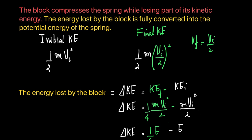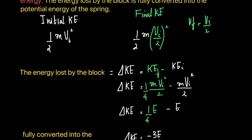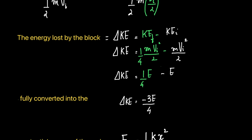Change in kinetic energy equals KE_final minus KE_initial. Final KE is (1/4)·E, since ½mv_i² equals E. So change in KE = E/4 − E = −3E/4. The energy lost by the block is therefore 3E/4 — that is the key distinction: the energy lost is positive 3E/4, not negative.